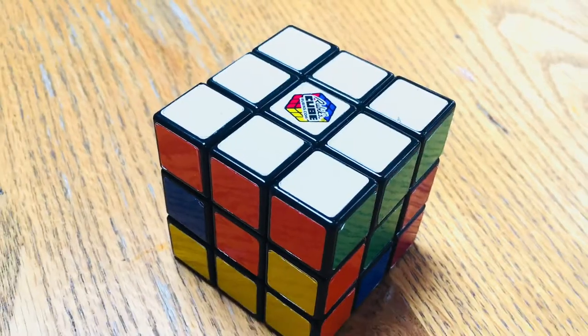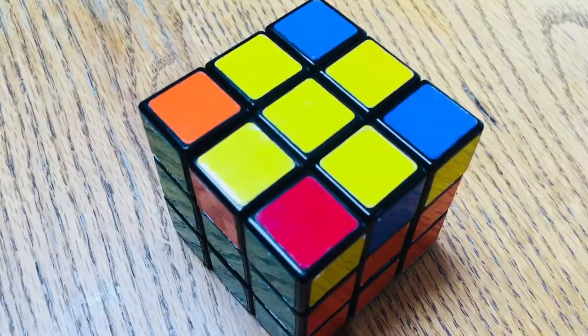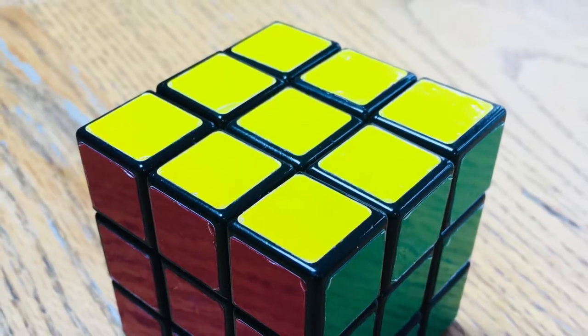That's white cross, white layer, middle layer, yellow cross, and then solve the yellow layer. And what I do in these videos is show you a few extra algorithms to make you a little bit more efficient when you solve.